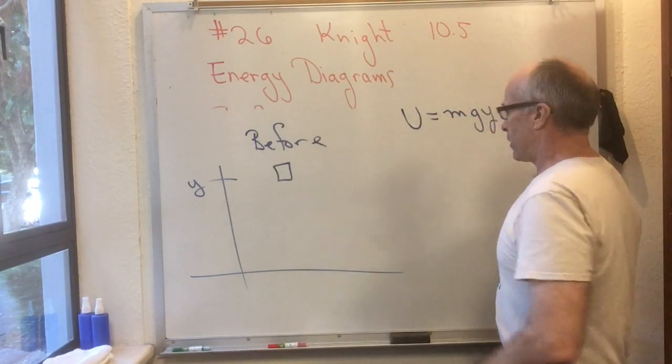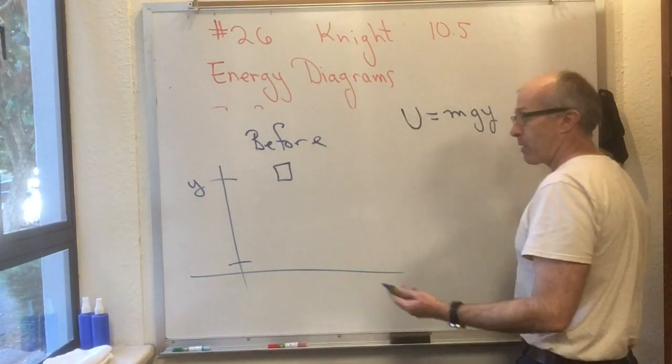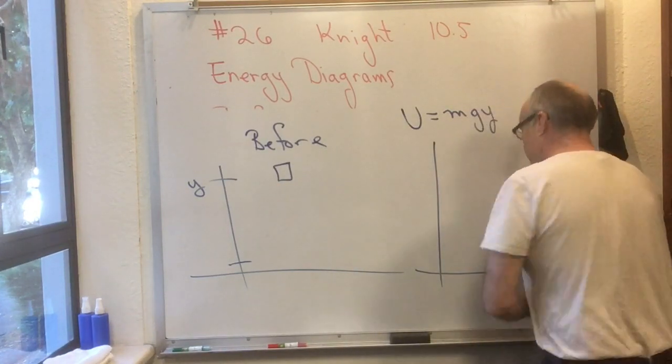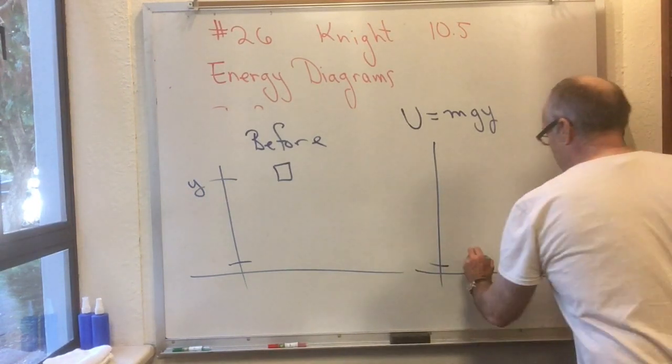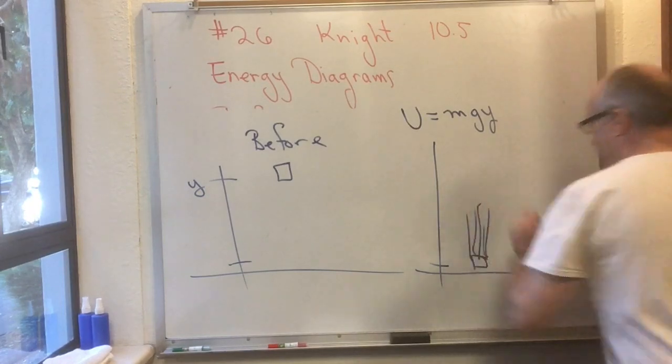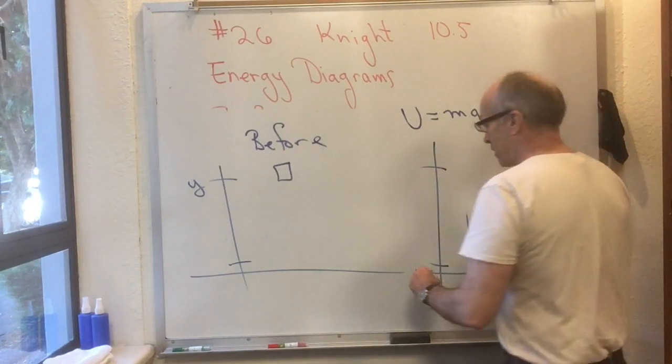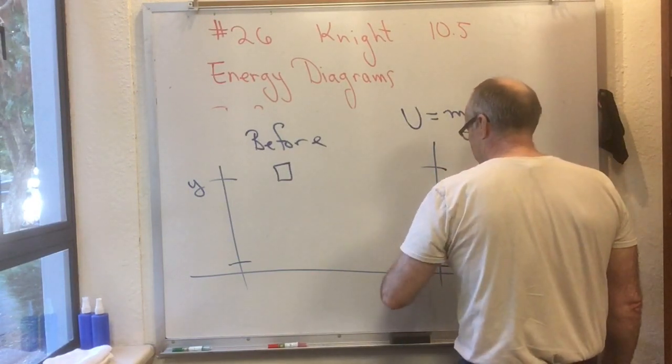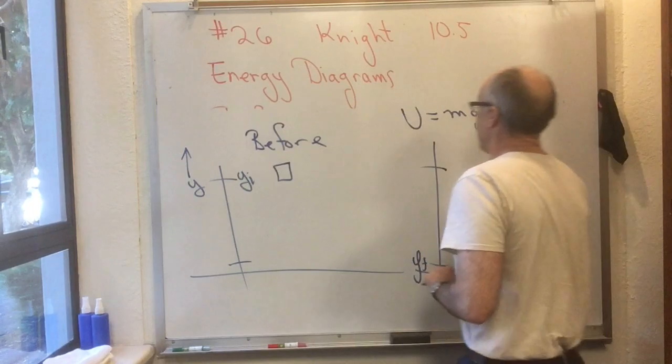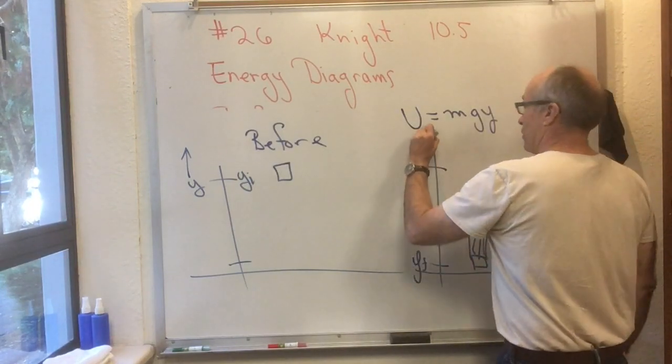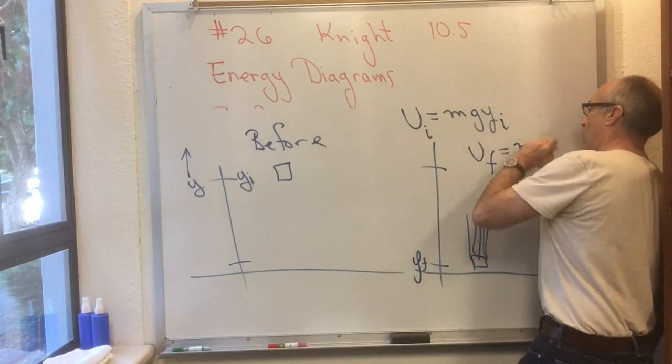And then in the after situation maybe this thing has fallen down to some much lower y value, maybe it's about to hit the floor. And so now the after situation would be that this thing is now moving quite fast in the downward direction. This thing's moving quite fast in the downward direction and it no longer has near as much height. So this might be y sub final and this is y sub initial. So the before is u initial is mgy initial and the after is u final equals mgy final.